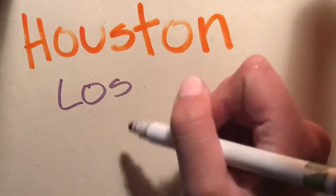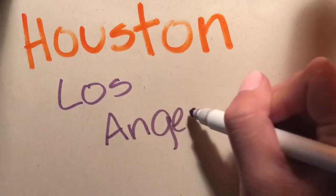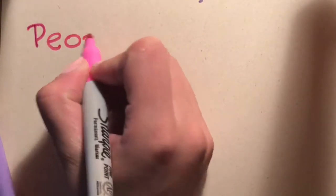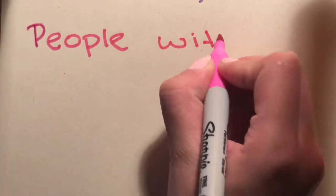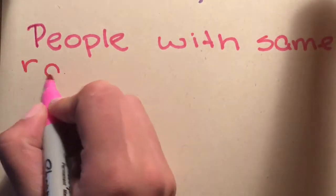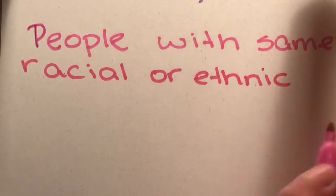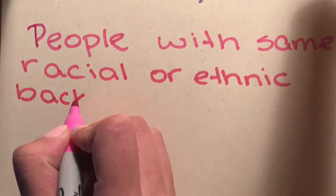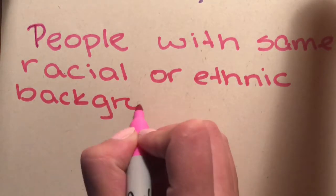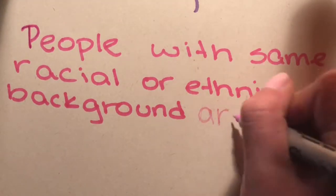Of course, the model cannot be applied to every single situation, and cities tend to modify it so it suits their specific circumstances. In cities which follow the multiple-nuclear model, people with the same ethnic or racial background are likely to live near each other, thus creating new, smaller CBDs where they congregate. Due to this, each city has a different layout even though they may follow the same model.